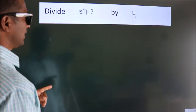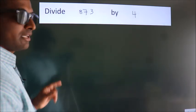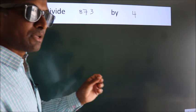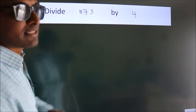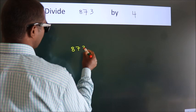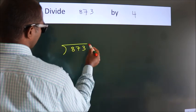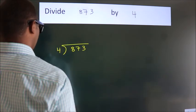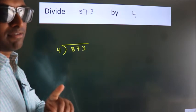Divide 873 by 4. To do this division, we should frame it in this way. 873 here, 4 here. This is your step 1.